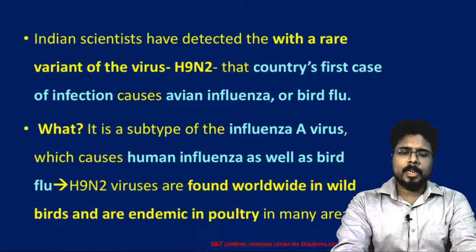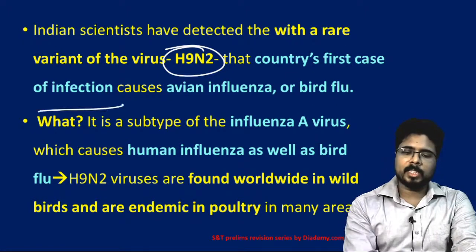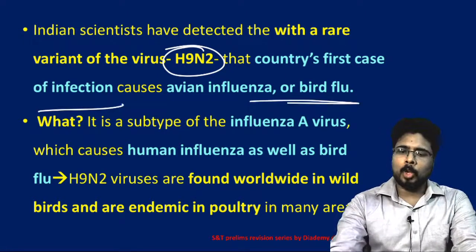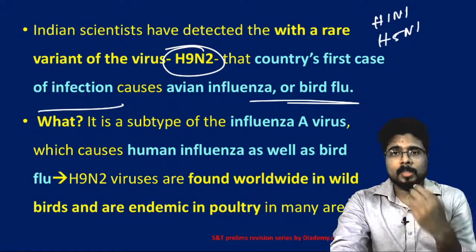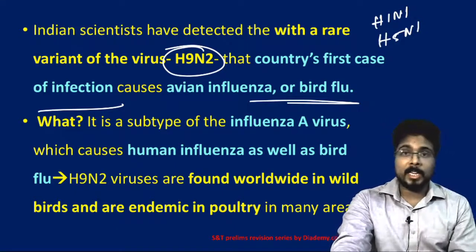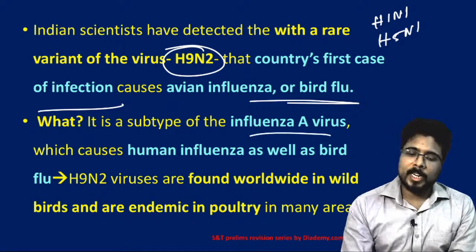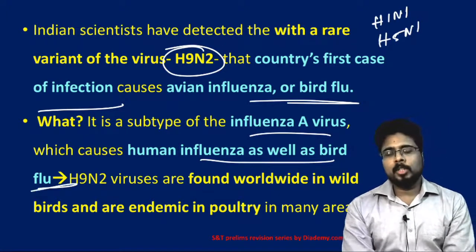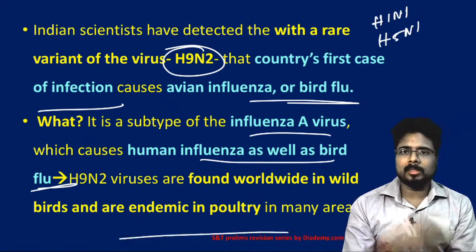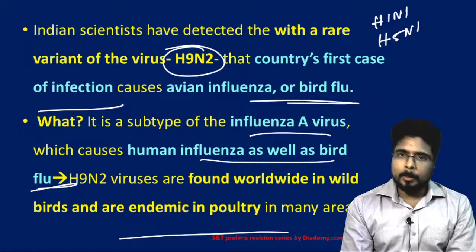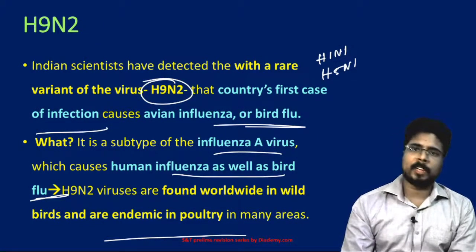First, H9N2. Recently, Indian scientists have discovered a rare variant of the virus H9N2 — the country's first case of infection that causes avian influenza or bird flu. Normally, H1N1 is swine flu and H5N1 is bird flu. H9N2 is a different strain altogether, first found in India. It's a type of influenza A virus which causes human influenza as well as bird flu, found worldwide in wild birds and endemic to poultry in many areas.